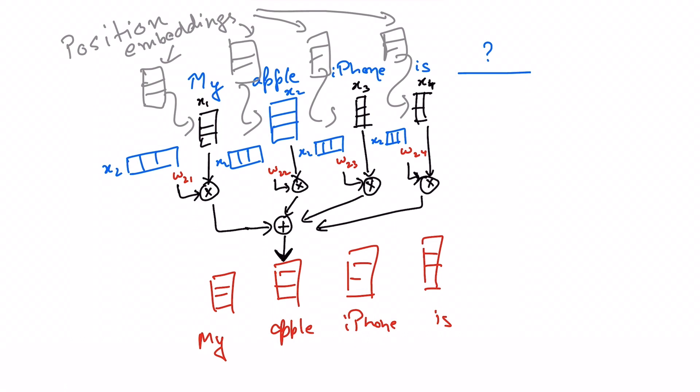Finally for completeness do notice that each initial word representation plays three roles in this computation. One it is compared with every other vector to establish the weights for its own output. Similarly it's also compared to every other vector to establish the weights for their outputs. And finally it is used as the weighted sum to compute each output vector once the weights have been established. These three roles are often referred to as key, query, and values. Now with the understanding of attention we have all the components to introduce the transformer block.